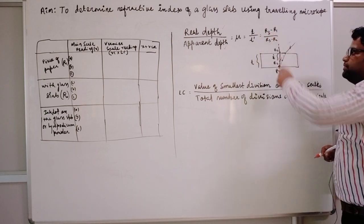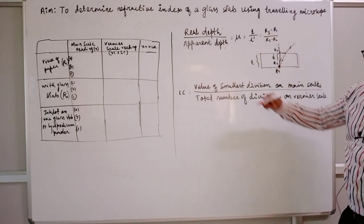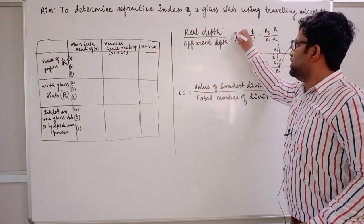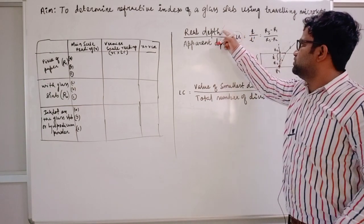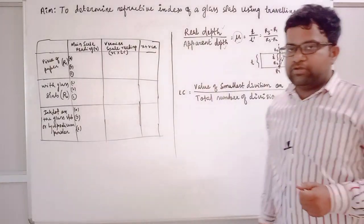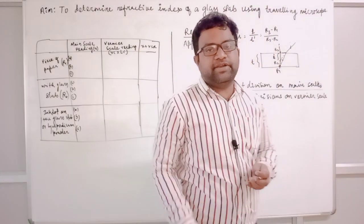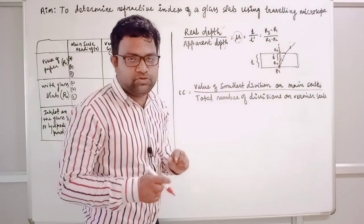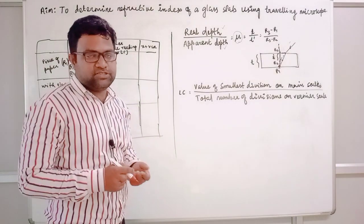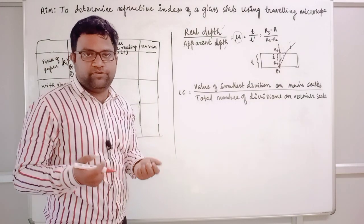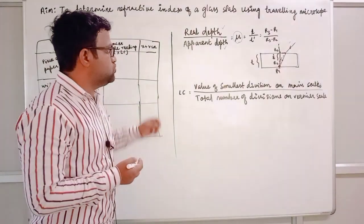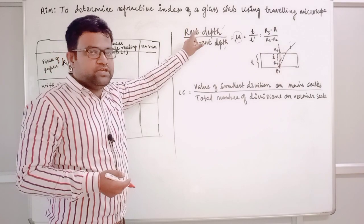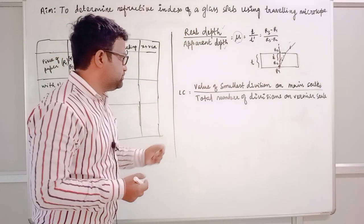Real height divided by apparent height gives your refractive index. This is the technique we will use to calculate the refractive index of the glass slab. We know that the refractive index of glass is 1.5, so approximately we will get that value using this method.